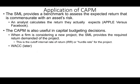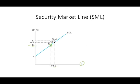What's the application of CAPM? How do we use CAPM? If we talk CAPM or security market line, it provides a benchmark to assess the expected return that's commensurate with an asset's risk. For example, if we invest in a stock that has a beta of one, we expect 14%. That's very important.